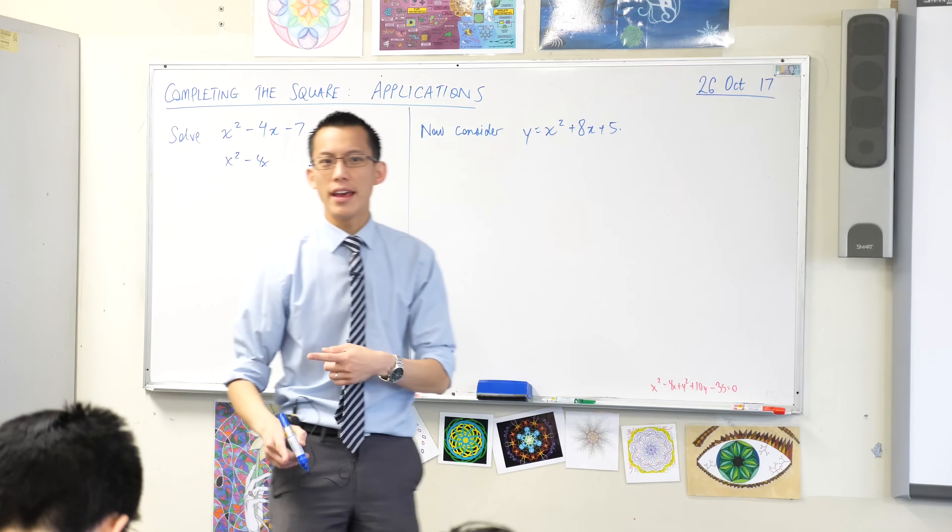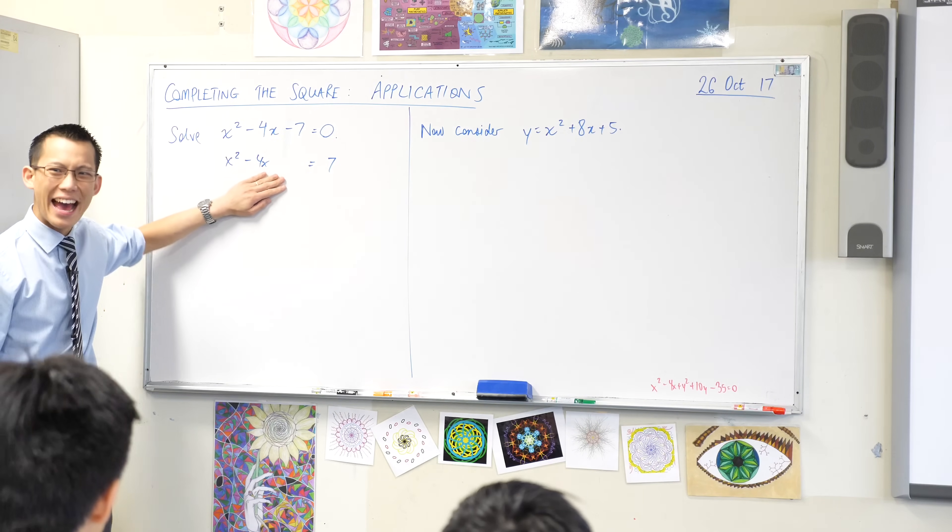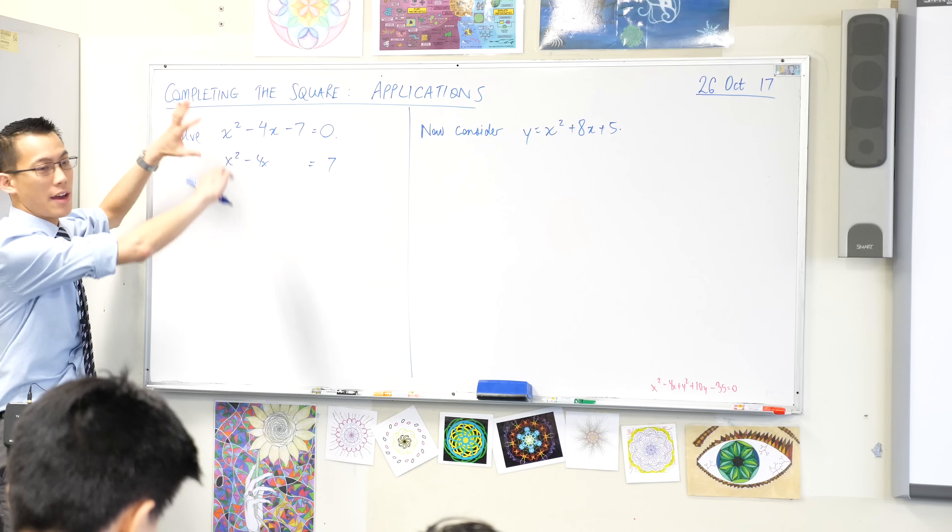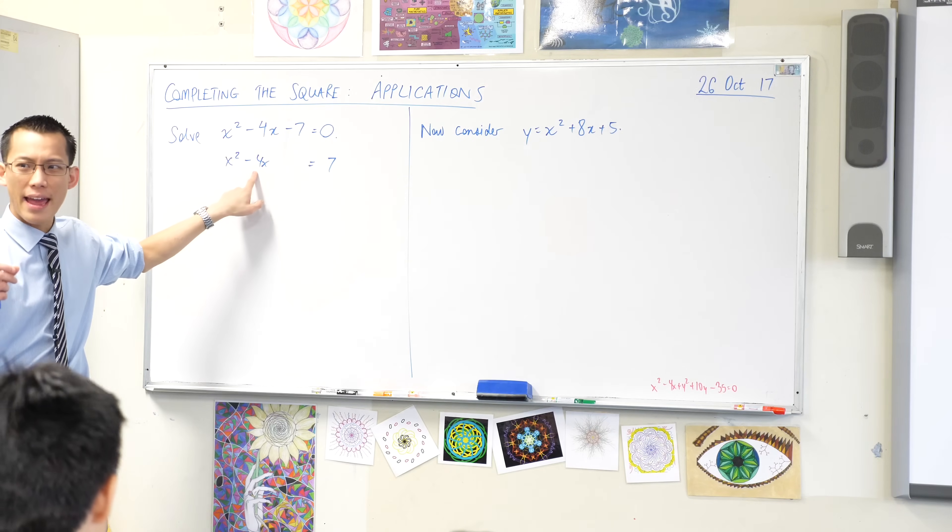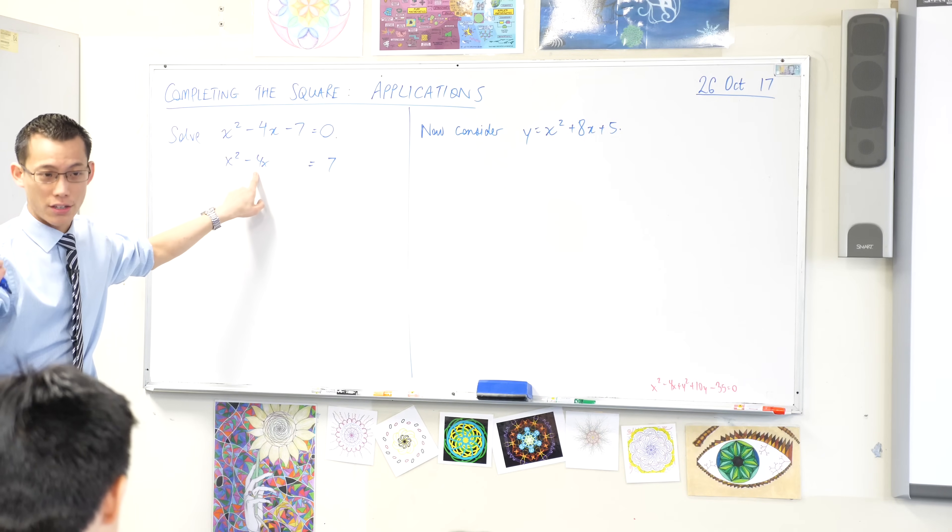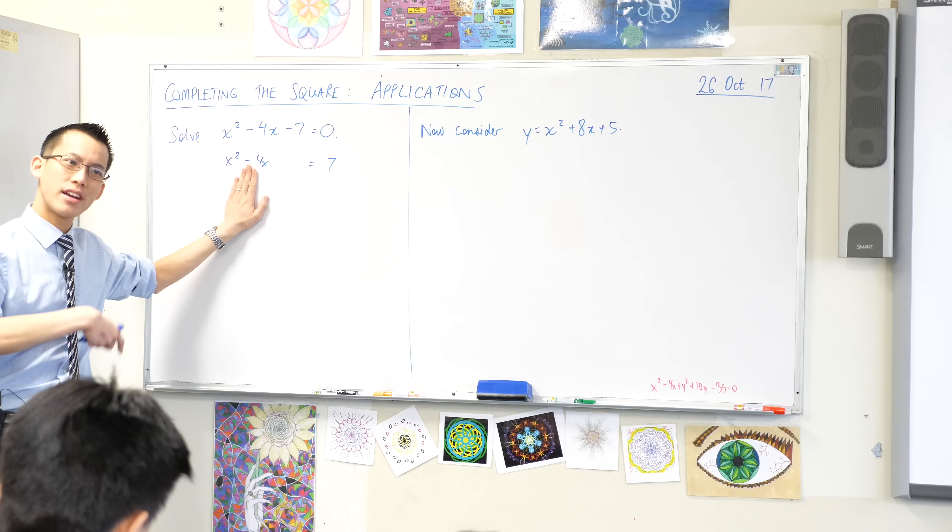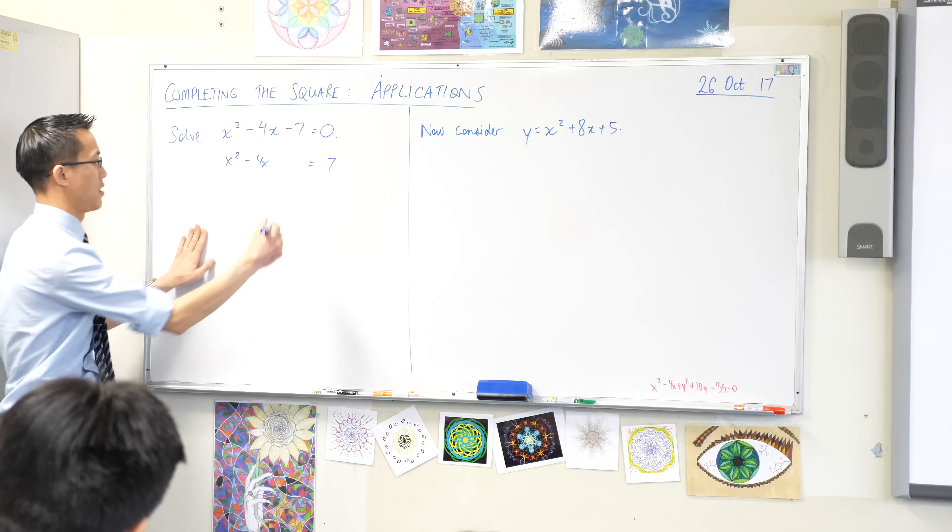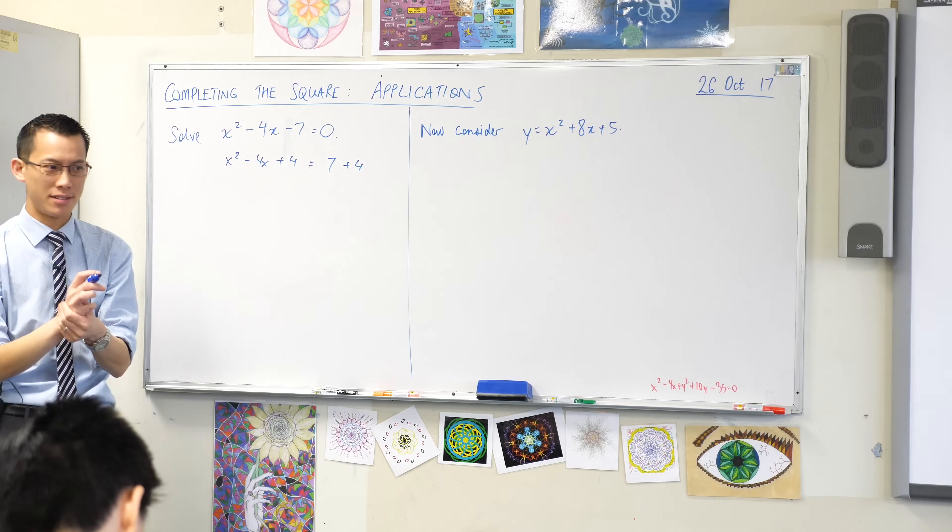Now the next thing I want is to complete the square as the name suggests. There's a number I can add to this left-hand side which when I factorize it would be square. So I get that number by halving and squaring. You halve and then you square. Halving now gives you negative 2, squaring it gives you 4. So I get plus 4, plus 4 because of course we should stay balanced.